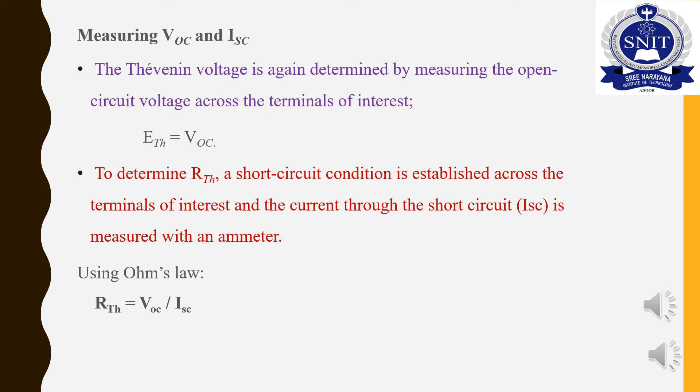In this method, we measure VOC and ISC — Thevenin's Voltage and Thevenin's Resistance. Thevenin's Voltage is the open circuit voltage. For Thevenin's Resistance, we use the short circuit condition. The resistance is the open circuit voltage divided by the short circuit current, which gives Thevenin's Resistance. Thevenin's Resistance is seen from the terminal with independent sources set to zero.